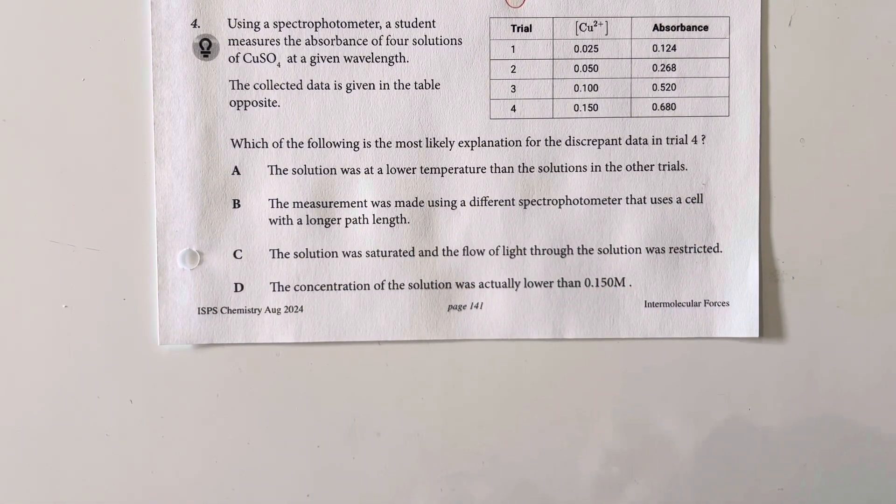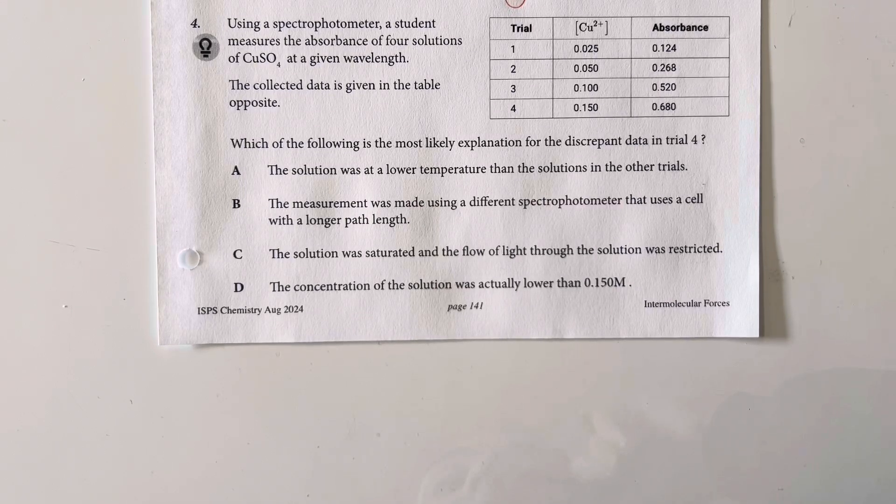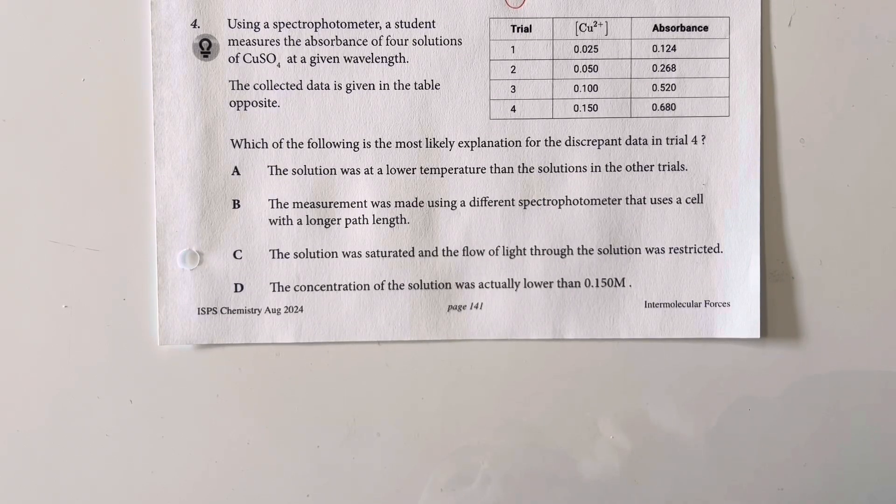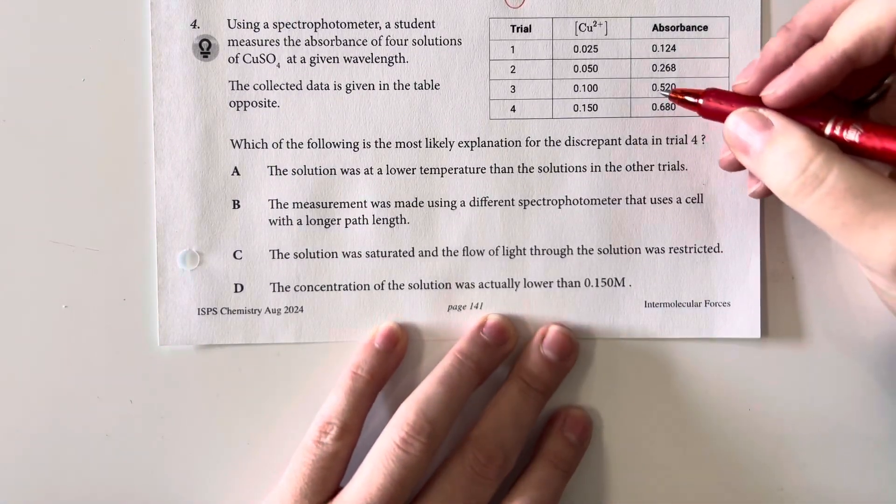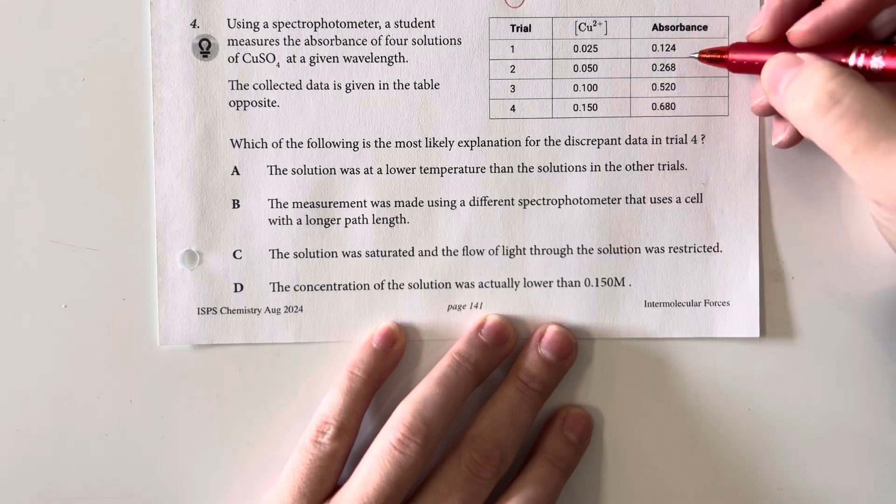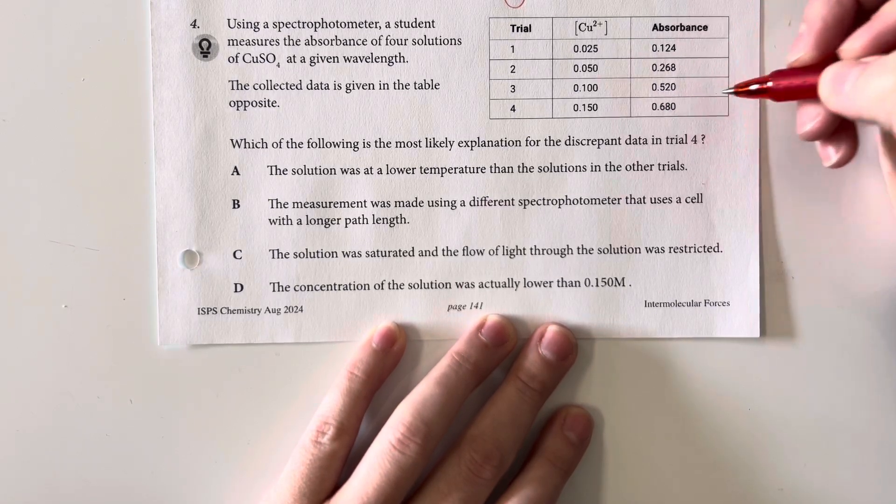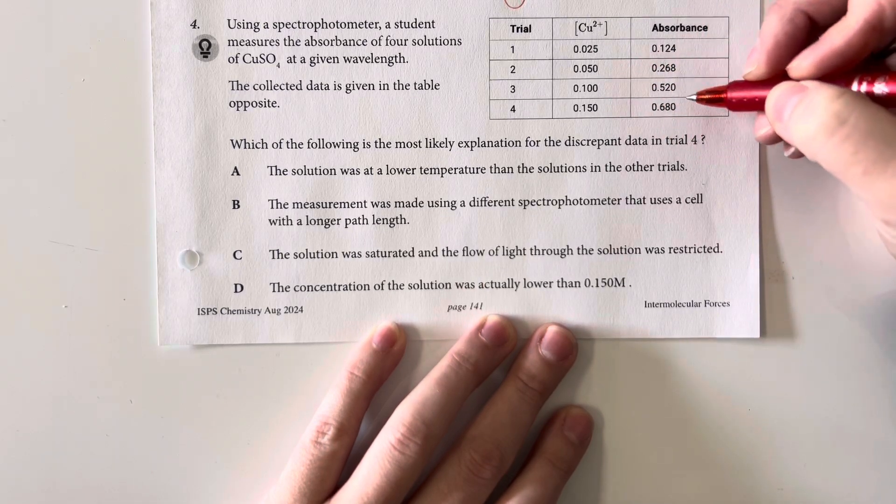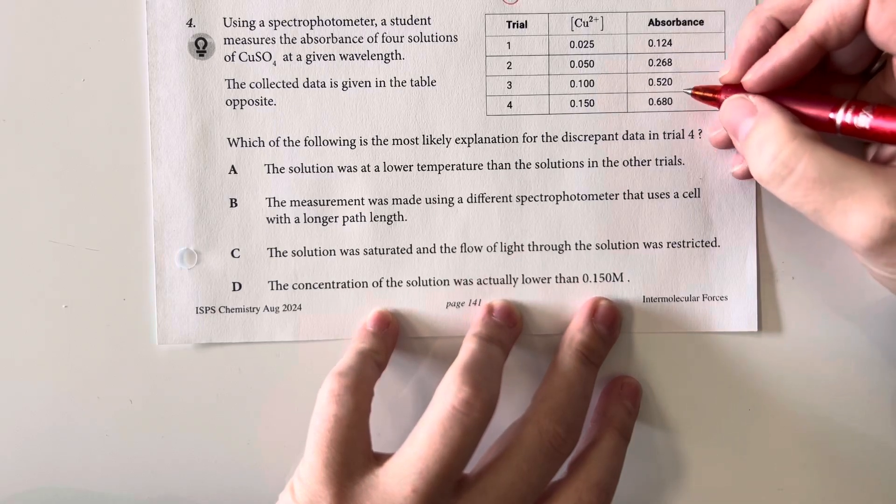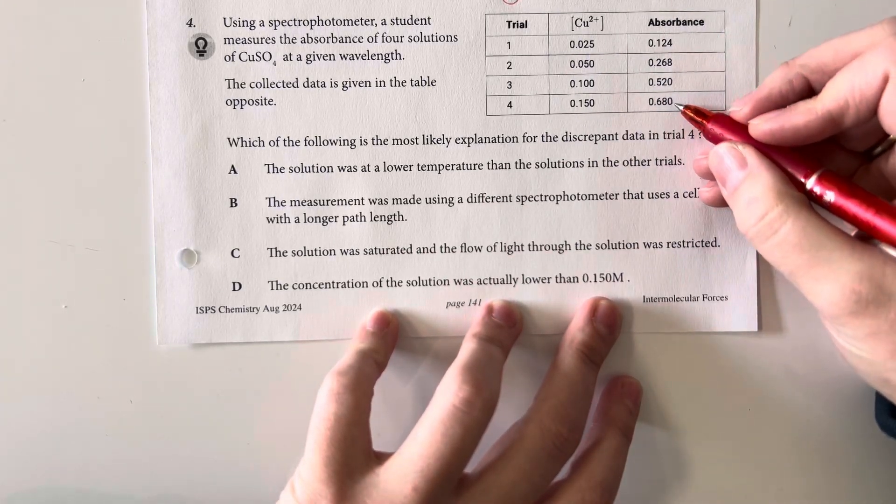Using a spectrophotometer, a student measures the absorbance of four solutions of copper 2 sulfate at a given wavelength. The collected data is given in the table opposite. Which of the following is the most likely explanation for the discrepant data in trial number four. So we are increasing our concentration of copper here and then we're looking at our absorbance here. So looking at these things I am doubling, doubling, and then half. And so I should look at approximately 1.5 times higher than this. So this is lower than 1.5 times higher than that. And so that would tell me that I have a lower concentration than I was expecting, because my absorbance isn't as high as I was expecting.